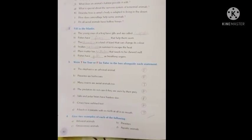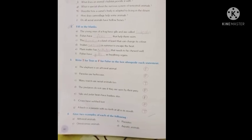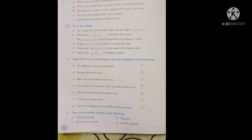Good morning students. Today we will learn questions number two and three. So open your book at page number forty. Fill in the blanks: The young ones of a frog have gills and are called tadpoles.